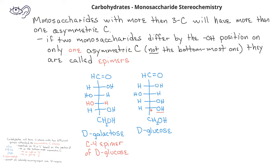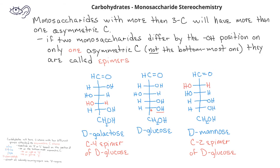On the other hand, if we start with D-glucose and switch the hydroxyl group on the second carbon to the opposite side, we would then have D-mannose. D-mannose is referred to as the C2 epimer of D-glucose.